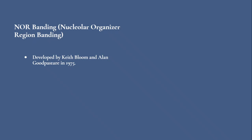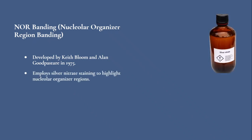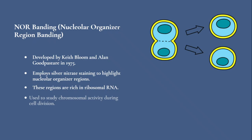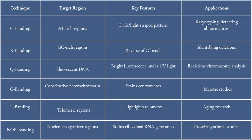NOR-banding was developed by Keith Bloom and Alan Goodpasture in 1975. It employs silver nitrate staining to highlight nucleolar organizer regions located on chromosomes. These regions are rich in ribosomal RNA genes and play a critical role in protein synthesis. NOR-banding is often used to study chromosomal activity during cell division.